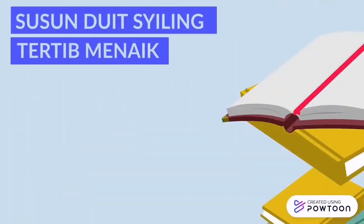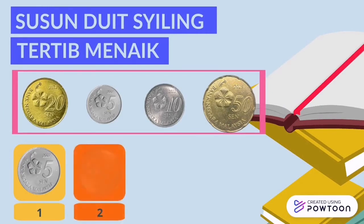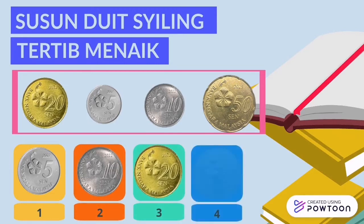Mari kita menyusun duit syiling tertib menaik. Perhatikan duit syiling berikut. Mari kita susun tertib menaik. Yang pertama, 5 sen. Yang kedua, 10 sen. Yang ketiga, 20 sen. Dan yang keempat, 50 sen.